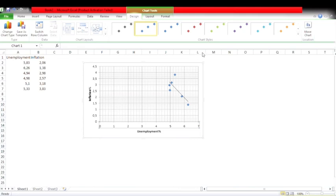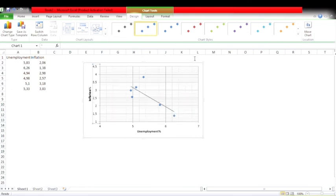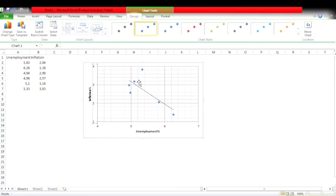In here, I change the numbers of axis so we can clearly see how the slope is. That's the result, so we will have an inverse relationship between unemployment rate and inflation rate.